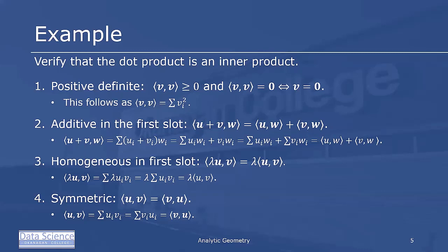Finally, we want to prove that the inner product is symmetric. The inner product of u and v is the sum of u_i times v_i. But since multiplication works in either direction, that's the sum of v_i times u_i, which by definition is the inner product of v and u. Because all four properties are satisfied, we conclude that the dot product is in fact an inner product.